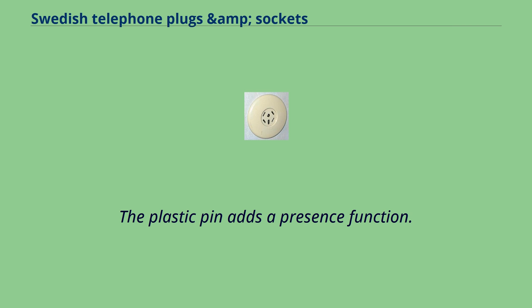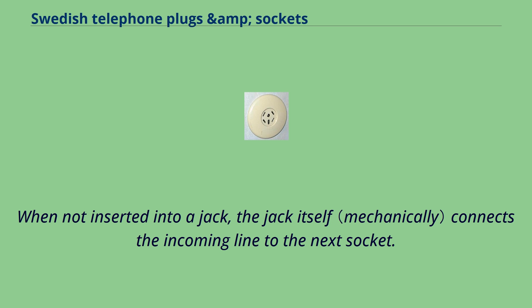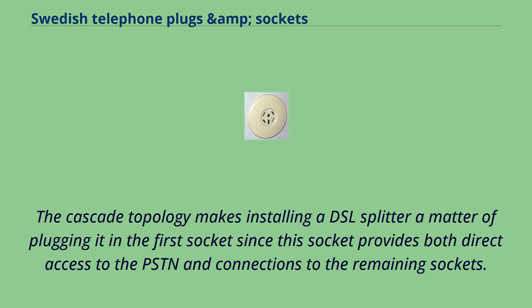The plastic pin adds a presence function. When not inserted into a jack, the jack itself connects the incoming line to the next socket. The cascade topology makes installing a DSL splitter a matter of plugging it into the first socket, since this socket provides both direct access to the PSTN and connections to the remaining sockets.